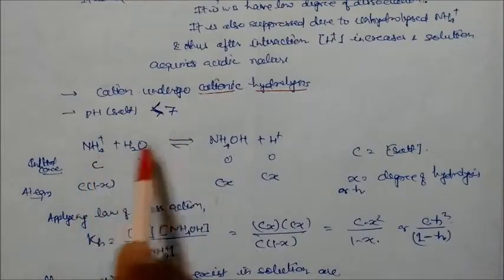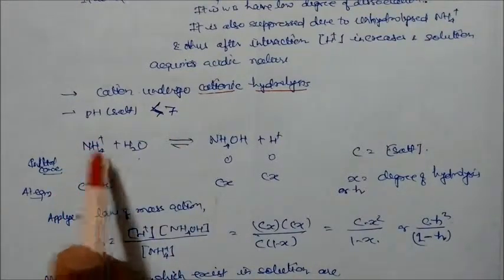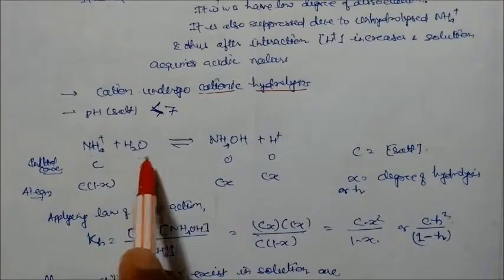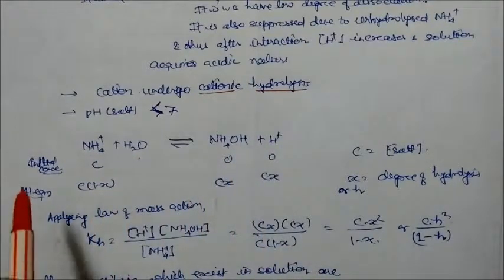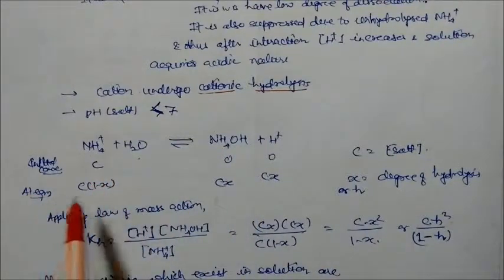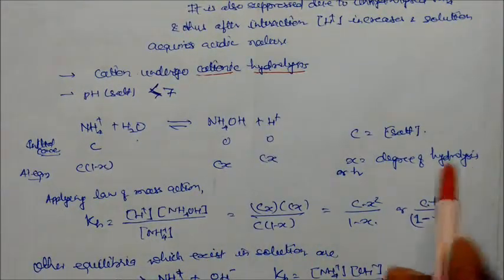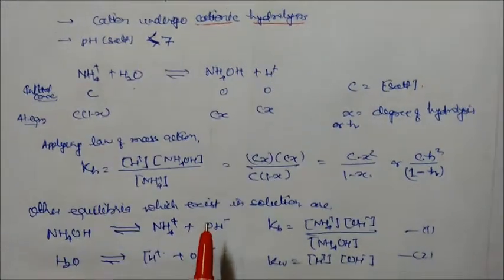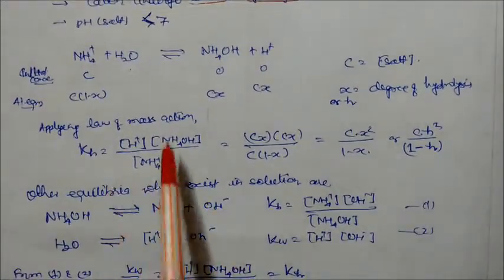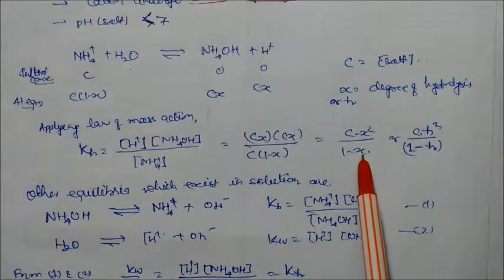Taking ammonium chloride: the ammonium ion reacts with water to form ammonium hydroxide + H⁺. Initial concentration is C; at equilibrium the concentrations are C(1−x), Cx, and Cx, where x (or H) is the degree of hydrolysis. Applying the law of mass action: KH = Cx² / (1−x), or KH = CH² / (1−H). Other equilibria also exist: ammonium hydroxide dissociates into NH₄⁺ + OH⁻, and water dissociates into H⁺ + OH⁻.